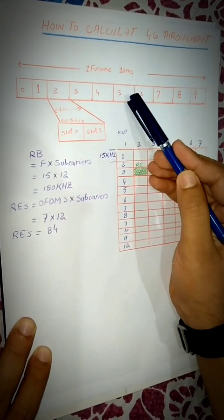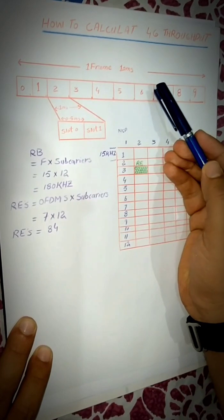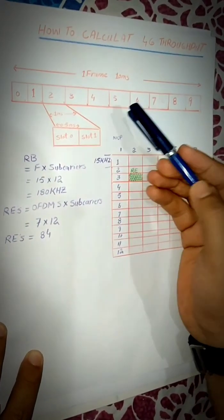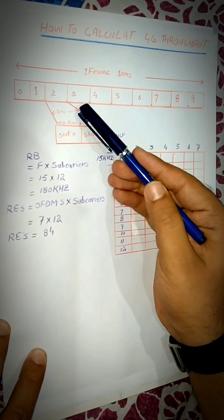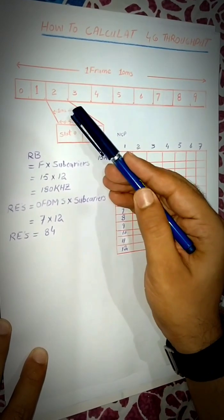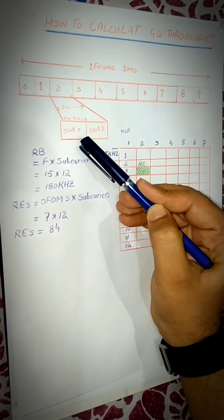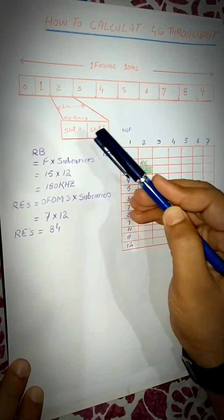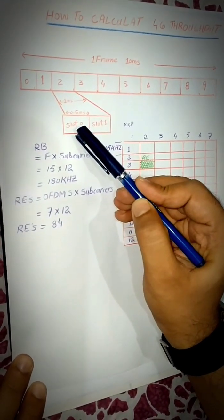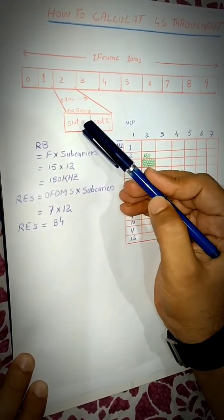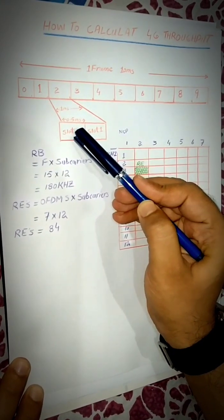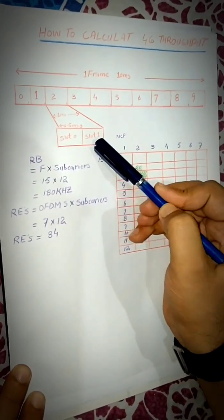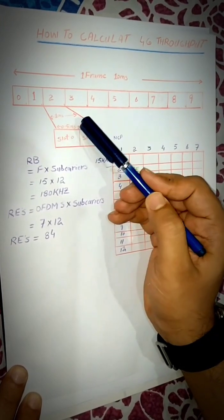One frame is 10 milliseconds in the time domain. Let's consider one slot, which is further divided into one subframe and two slots. Each slot carries 0.5 milliseconds in the time domain, so there are a total of two subframes per one millisecond.